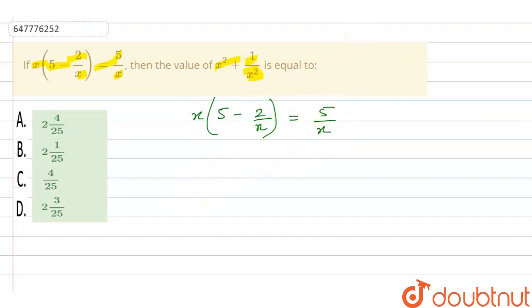If we multiply the bracket, it will be 5x minus, x cancel x, then it will be minus 2 will be equal to 5 upon x.